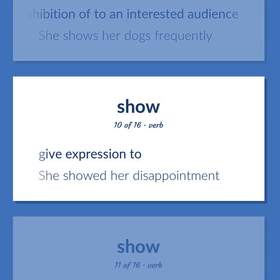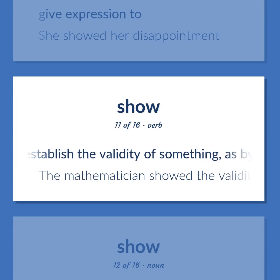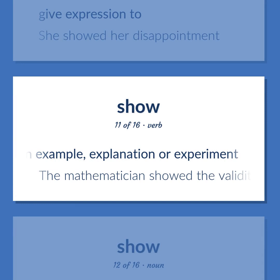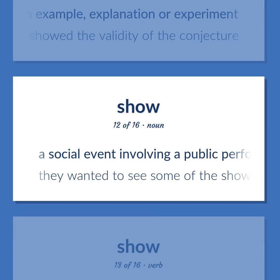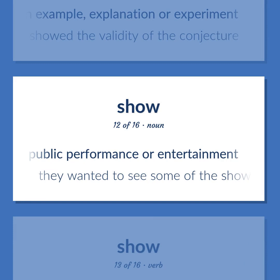Give expression to. She showed her disappointment. Establish the validity of something, as by an example, explanation or experiment. The mathematician showed the validity of the conjecture. A social event involving a public performance or entertainment. They wanted to see some of the shows on Broadway.